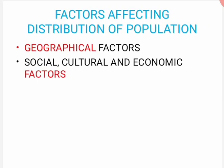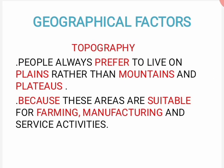Ab hamara jo population distribution hai, wo uneven hai — kahin par bahut zyada hai, kahin par bahut kam. Ab ye jo factors hain, wo kisi cheez se affect karte hain, tabhi uneven hai distribution. Toh kaun-kaun se factors hain? Wo hain geographical, social, cultural and economic factors.